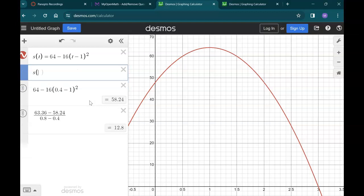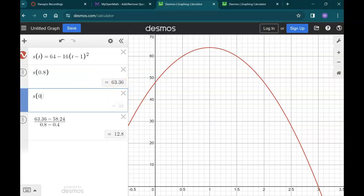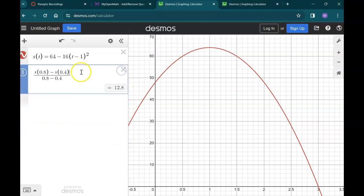I think even more exciting than that, we could actually just fill it all in right here. s(0.8) - s(0.4) over 0.8 - 0.4. And there's our 12.8. And we don't even need these intermediate steps. So let's start using that. Our next slope was supposed to be 0.7 to 0.8. So let's go ahead and change the 0.4 to 0.7. And we get exactly 8. The next one after that, I'm just going to copy and paste again, was supposed to be 0.79 to 0.8.